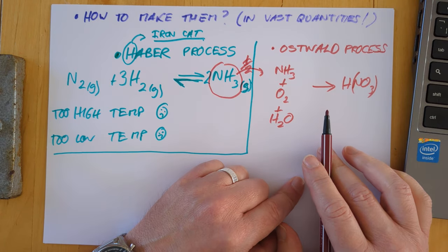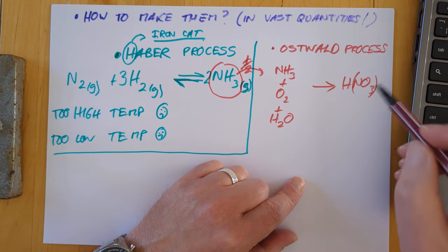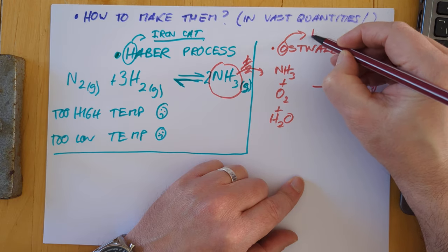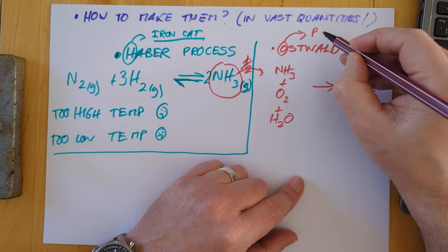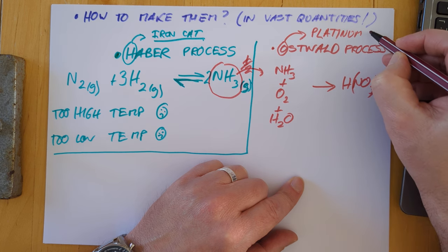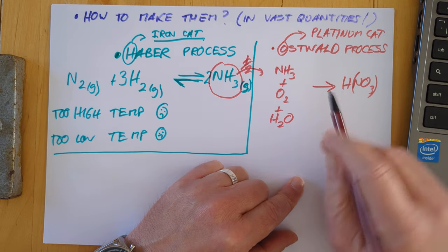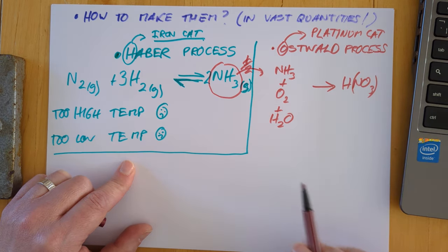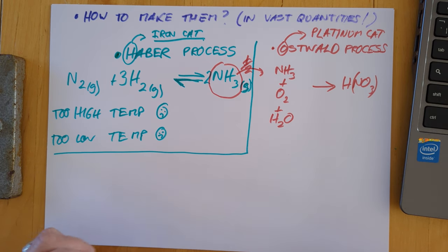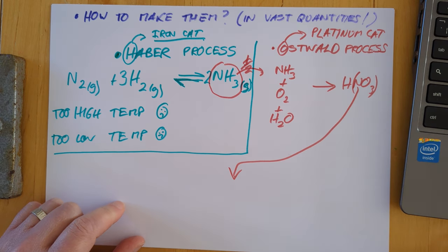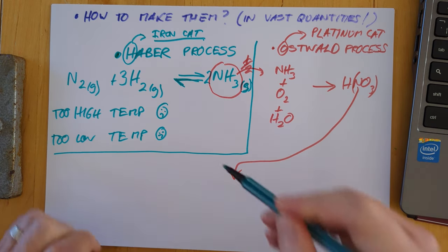So the Ostwald process makes nitric acid. The only detail you need to know now, again you used to have to know more details, is if you take the O and go up one click in the alphabet you get to P. There's an unusual catalyst here, it's platinum. So we need a platinum catalyst. That would be super expensive, probably owned by a rapper somewhere actually I would imagine. My platinum cat.